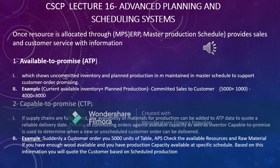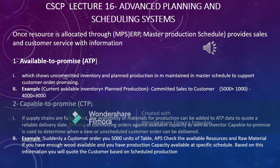Now let's talk about the information APS provides to the sales and services team. The first is Available to Promise. APS tells you how much inventory is available to promise — meaning inventory that is not committed to any customer. You calculate it as: total inventory quantity plus planned production minus sales orders. The remaining quantity is what is available to promise, and you are confident that this will be available for customers.